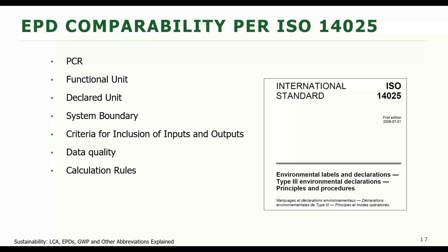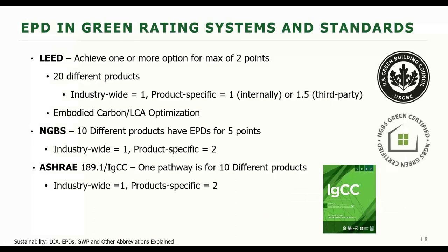Finally, EPDs need to have the same calculation rules. For example, the current EPDs for lumber use different allocation rules than the previous EPDs — one is based on mass and the other on economic value. How the lumber is produced may not have changed at all, but since the allocation has changed, the numbers have changed. Because the usefulness of EPDs is so limited, green rating systems and standards usually only require products to have EPDs or are very specific about how they can be compared.